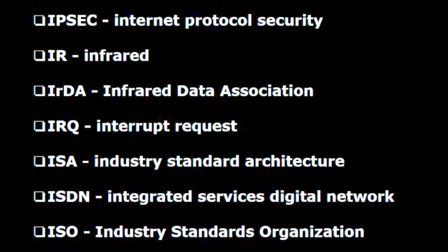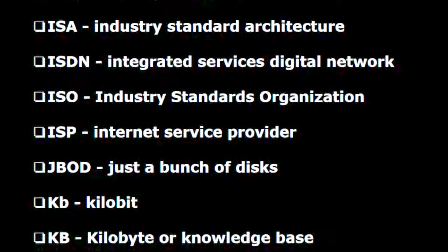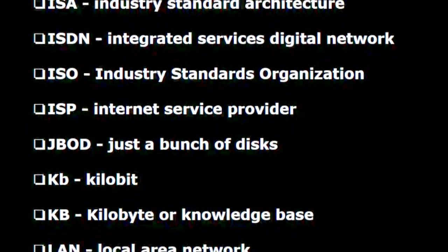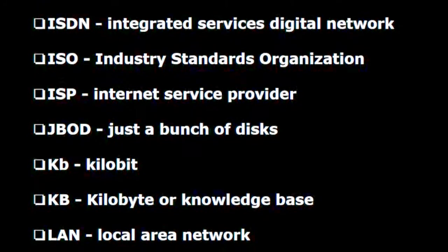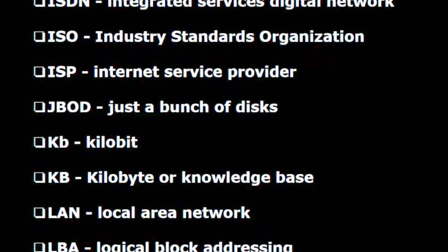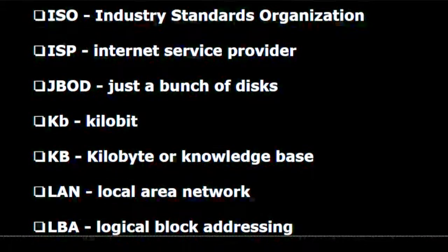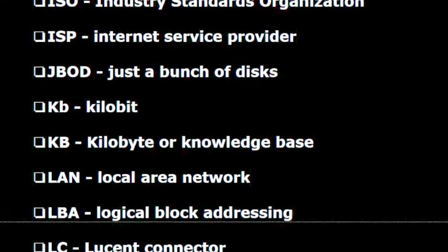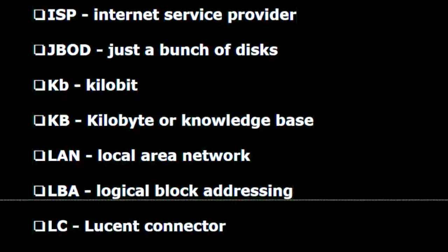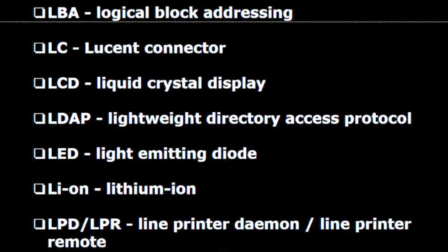I.S.A. — Industry standard architecture. I.S.D.N. — Integrated services digital network. I.S.O. — Industry standards organization. I.S.P. — Internet service provider. J.B.O.D. — Just a bunch of disks. K.B. — Kilobyte. K.B. — Kilobyte or knowledge base. L.A.N. — Local area network. L.B.A. — Logical block addressing. L.C. — Lucent connector.